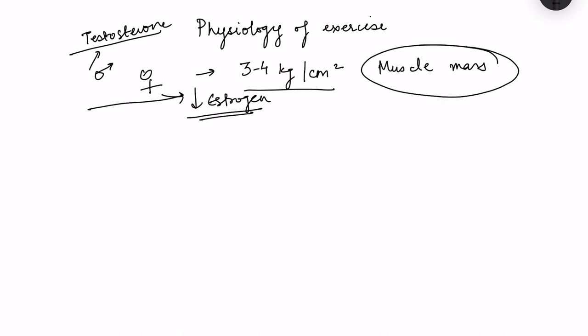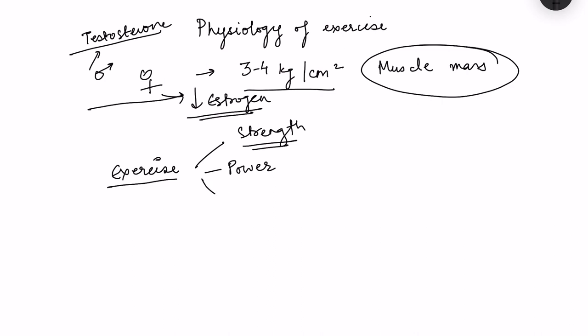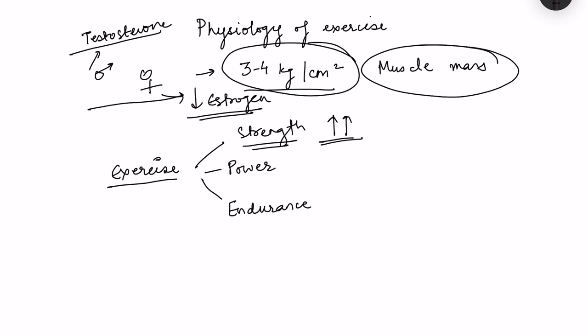Whenever we talk about exercise, three terms we should be aware of: strength, power, and endurance. Strength means the force of contraction per centimeter square. If muscle mass is more, then the strength of contraction or the force generated by the muscle will be more.